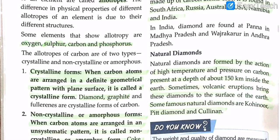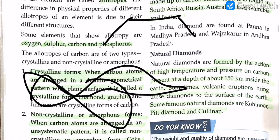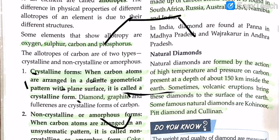When carbon atoms are arranged in a definite geometric pattern on a plain surface, it is known as a crystalline form. Diamond, graphite, and fullerenes are crystalline forms of carbon. 'Definite geometric pattern' means the atoms are arranged in a specific shape — like a hexagon, square, or pentagon — a shape you can identify.